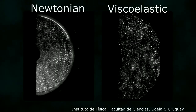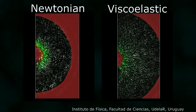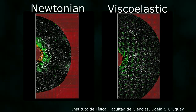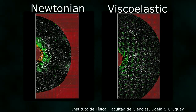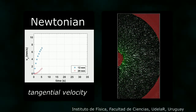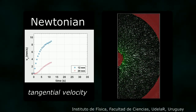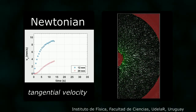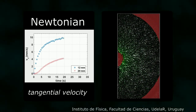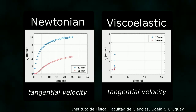From the videos we can get black and white images, and from them we can measure the velocity field. Plotting the tangential velocity of the fluid particles, we see the Newtonian behaves as expected. The velocity for the two different axial distances monotonically increases.